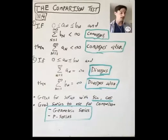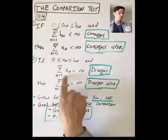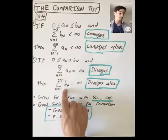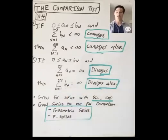So with this setup: 0 ≤ a_n ≤ b_n — if the sum of the b_n's, the bigger numbers, converges, then the sum of the a_n's, the smaller numbers, also converges. If the sum of the smaller numbers, the a_n's, diverges, then the sum of the bigger numbers, the b_n's, also diverges.